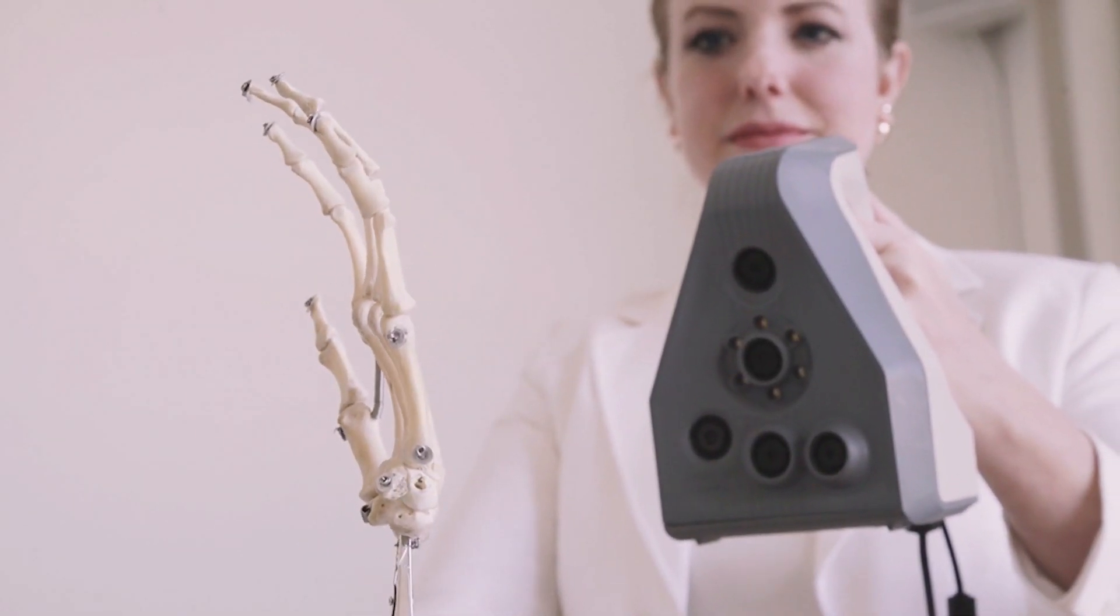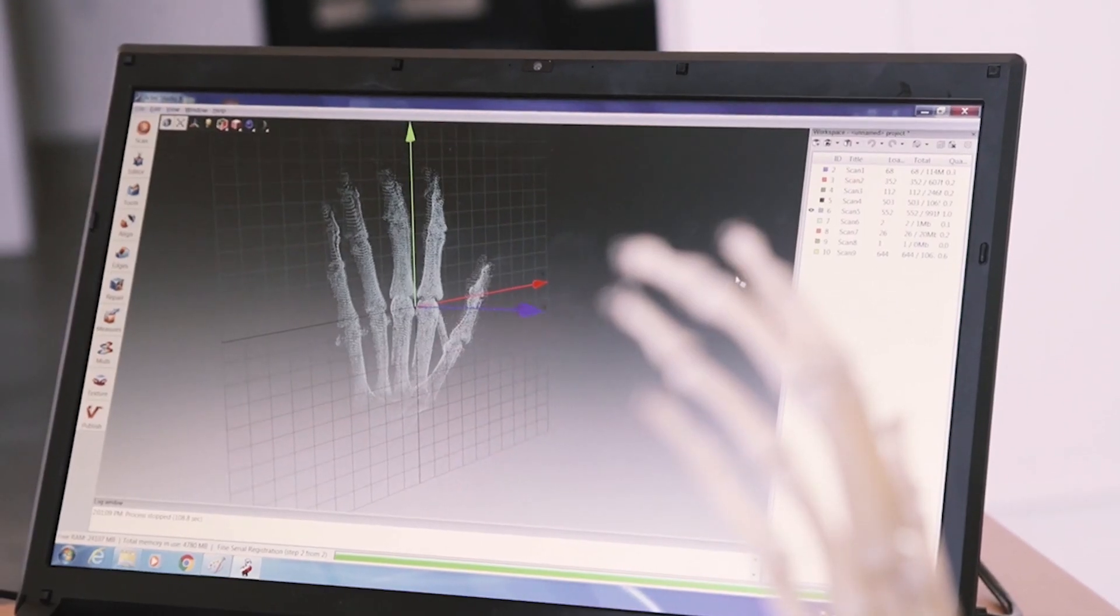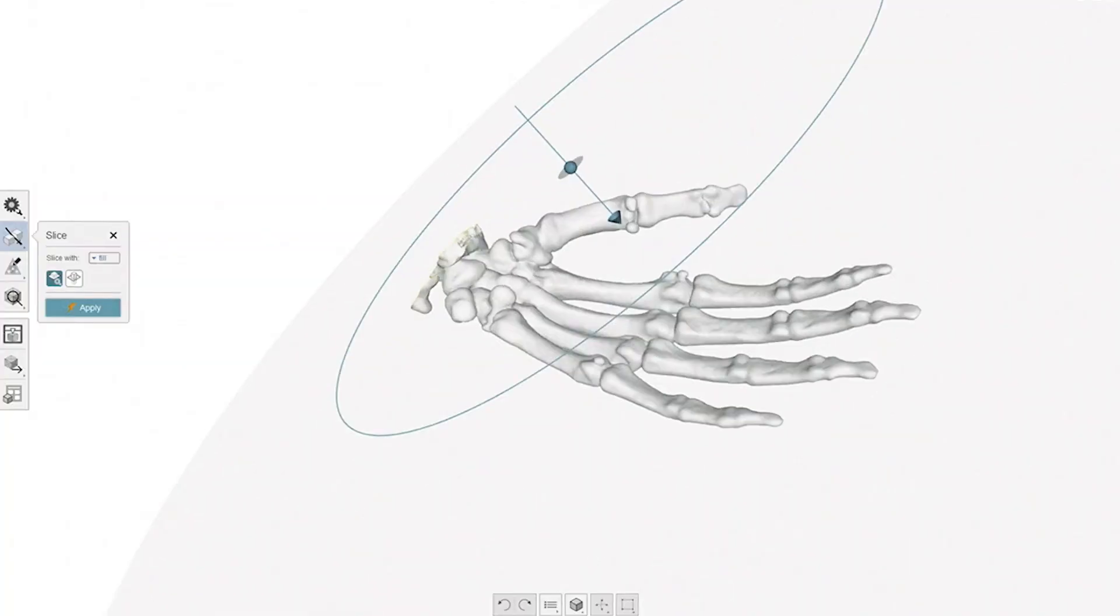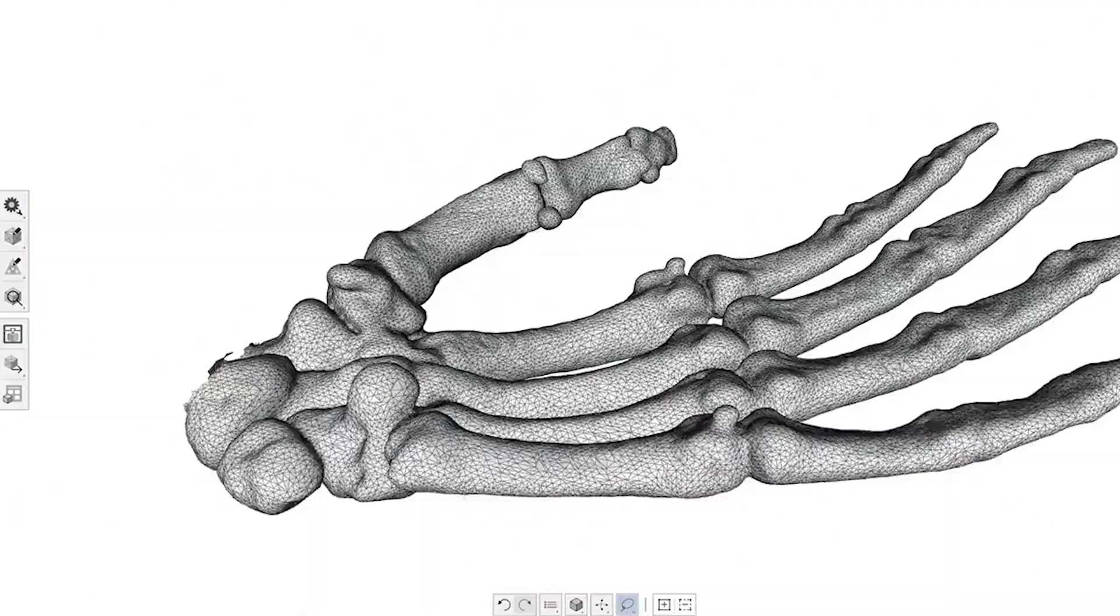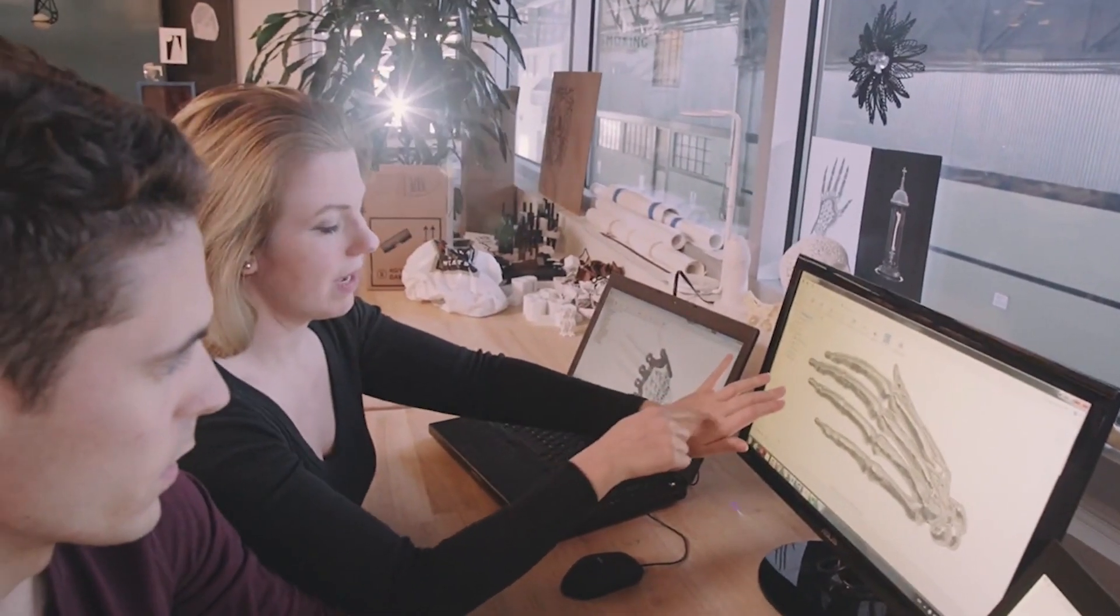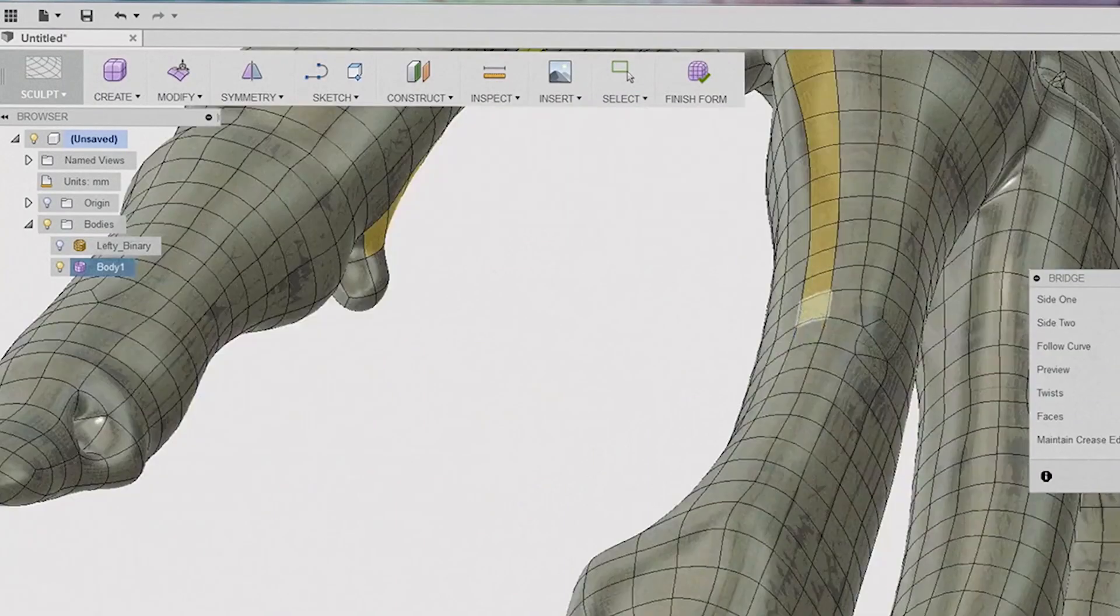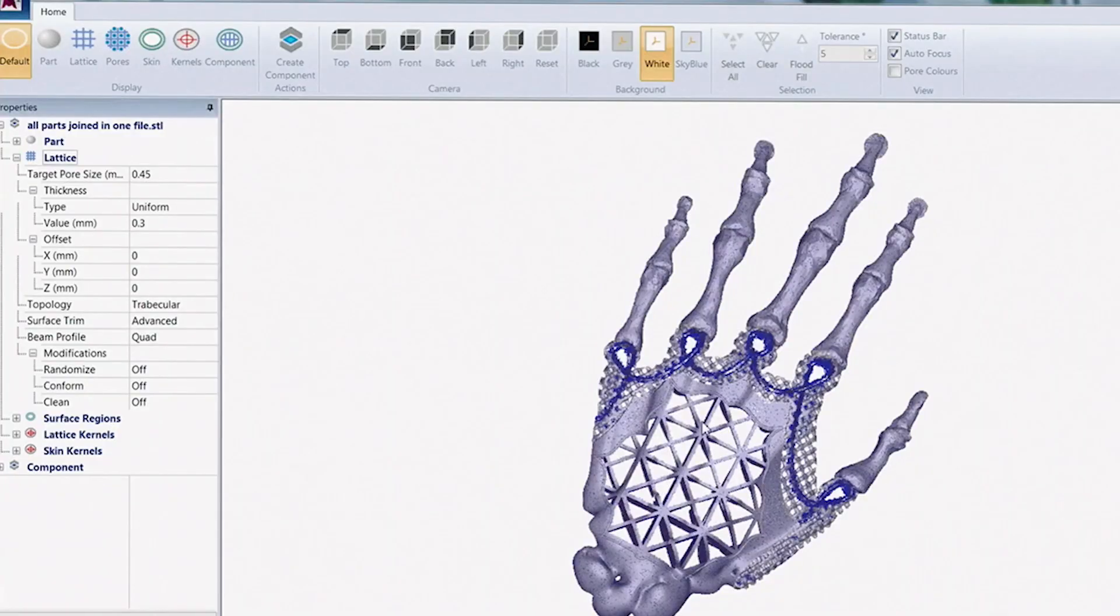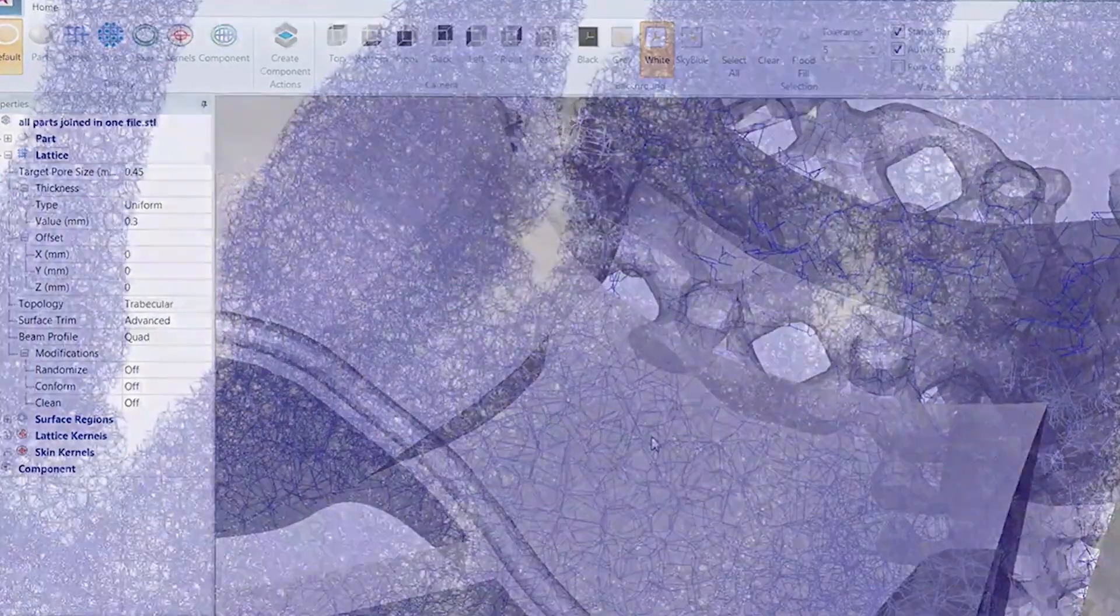I 3D scanned a hand bone of a female hand that was about the same size as me. Then we took that 3D scan data, processed it, and brought it into a 3D modeling environment. Once I refined that design, I used a program called Within Medical to break this geometry down to the cellular level in a trabecular structure.